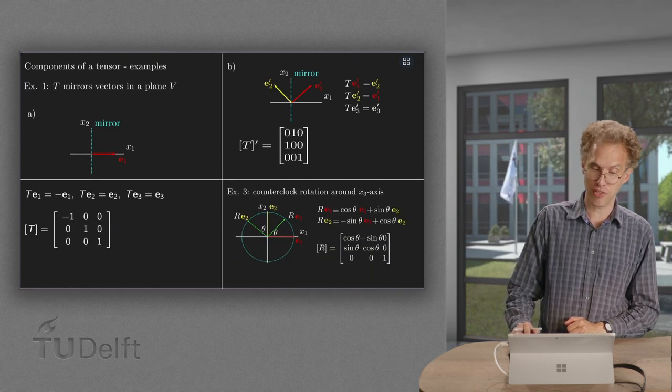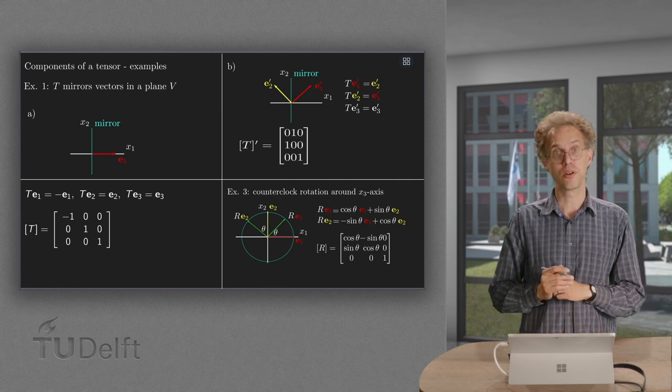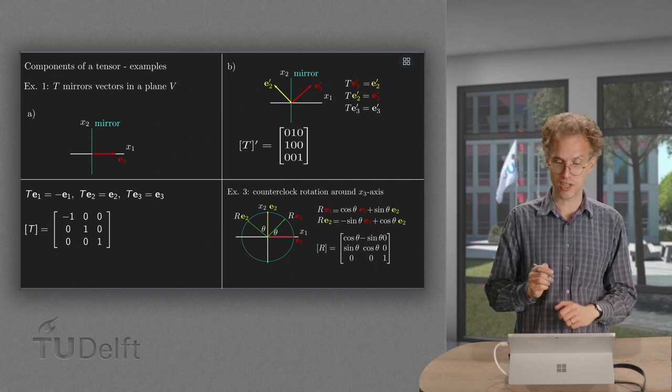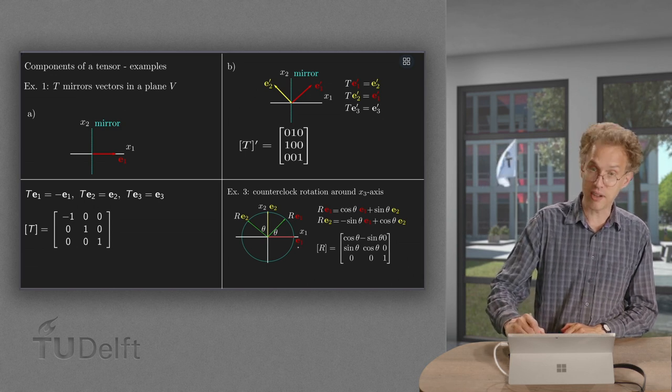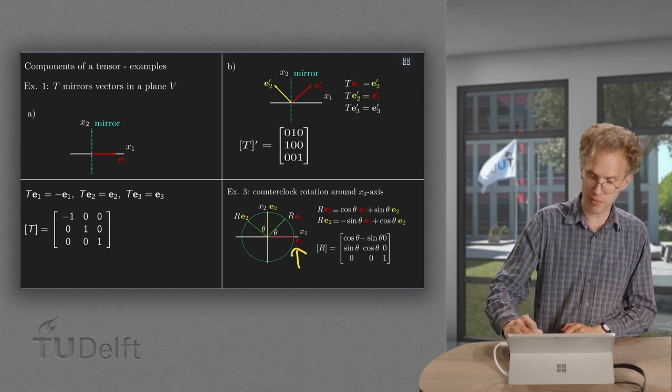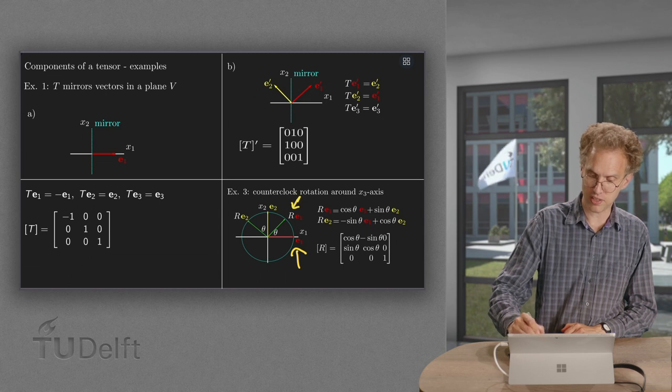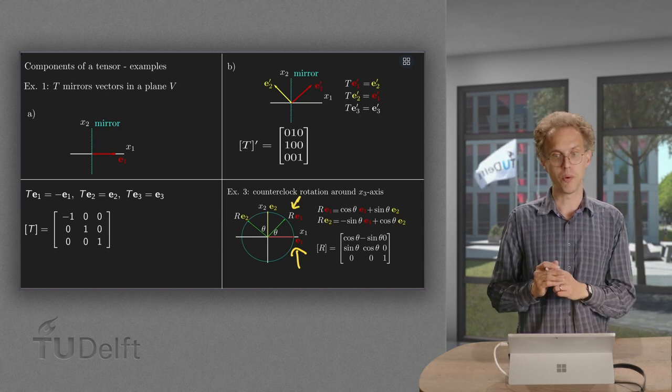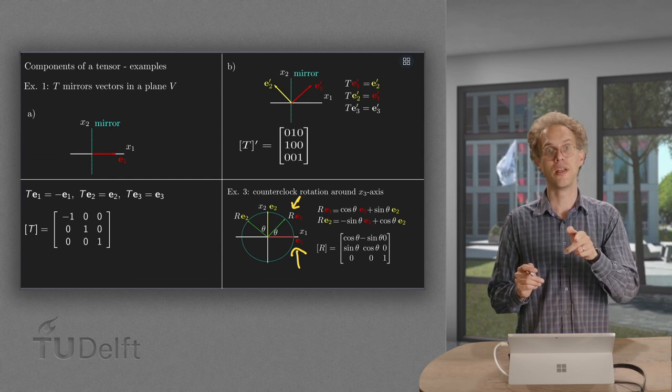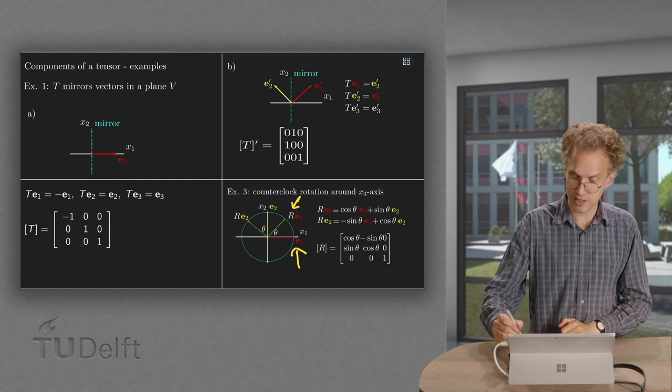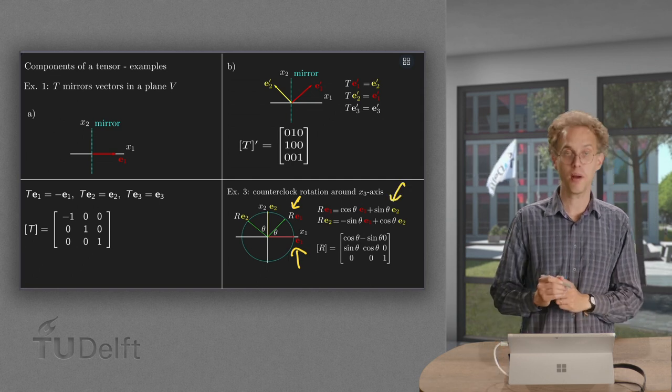Now let's do a third example. If we rotate counterclockwise around the x3 axis over an angle theta, we start with our e1, we rotate it, we get R(e1). Now what's R(e1)? We go cosine theta in the e1 direction plus sine theta in the e2 direction, so there we are.